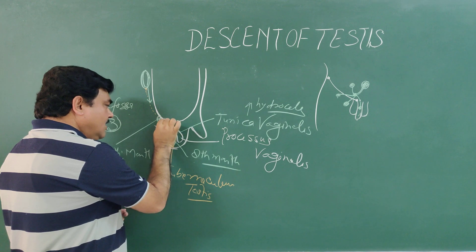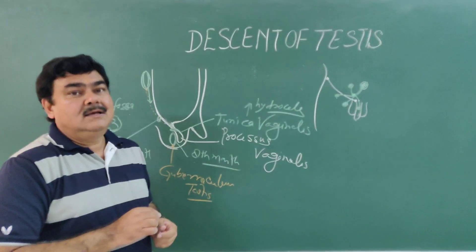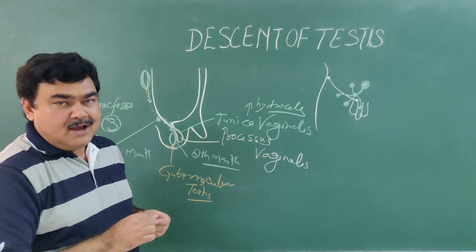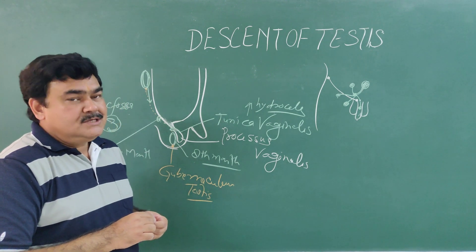So if this testis does not descend, it may lie in the inguinal canal. Then there may be chances of inguinal hernia. This testis cannot form sperm.